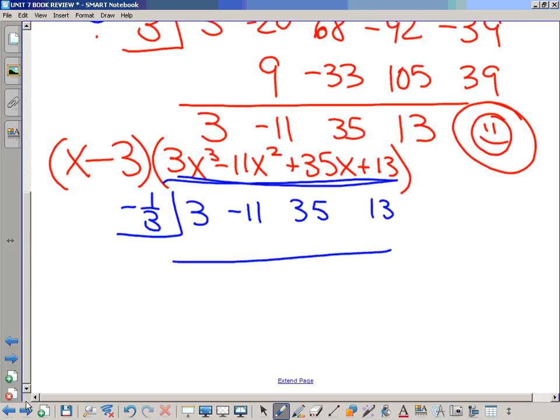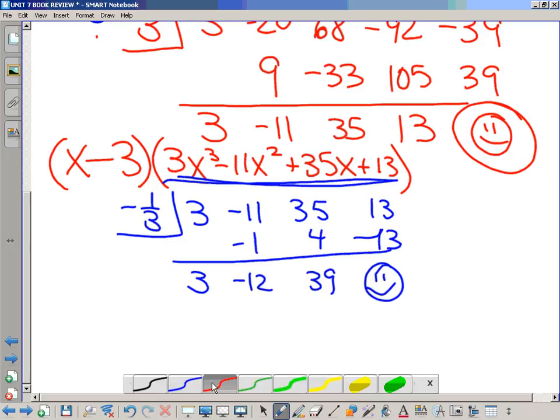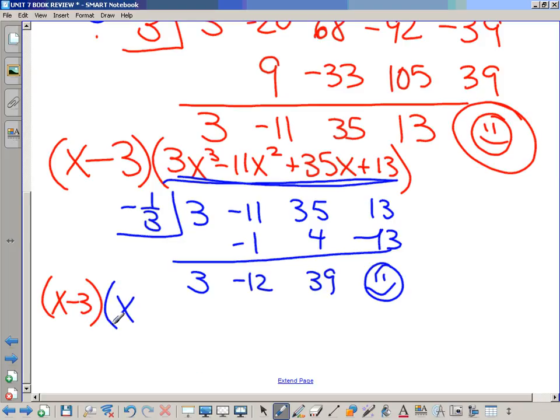Bring the 3 down. Multiply. One-third times 3 is 1, negative 1. Add, negative 12. A third of 12, negative negative is positive 4. Add. 39 times negative one-third is negative 13. Yay. Zero. So that means, from the red part, we knew that x minus 3 was a candidate, was a good root. From the blue synthetic division, we now know that x minus minus one-third.